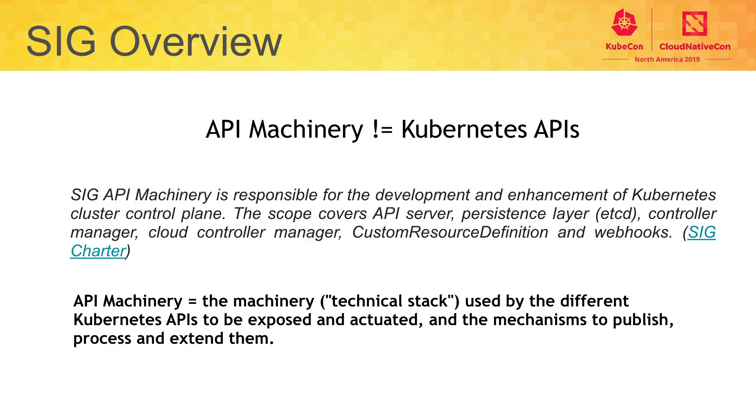As you know, all your requests, anything that we want to do with the cluster, is going to come through our software. The talk covered what are the parts of Kubernetes that we own, and also what are the parts that we don't own. Some people think that because we are called API Machinery, we own all the Kubernetes APIs, which is not the right thing. So I think it was a good talk to give an overview of what we own.